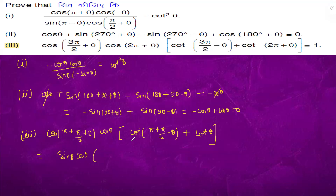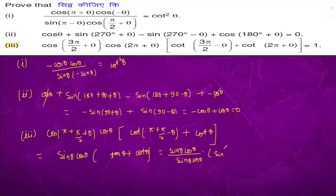So cot(π + α) is cot θ, and cot(π/2 - θ) is tan θ, and this is cot θ. Taking the LCM — sine θ · cos θ — it will become sin/cos θ and cos/sin θ, giving sine θ · cos θ. This becomes sin²θ + cos²θ, which equals 1.